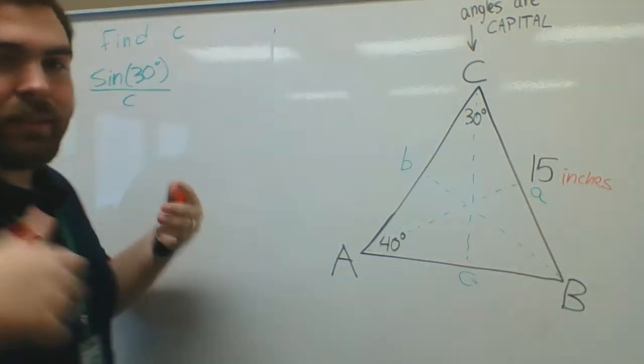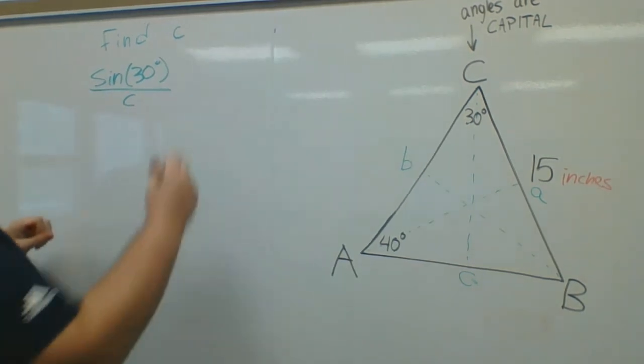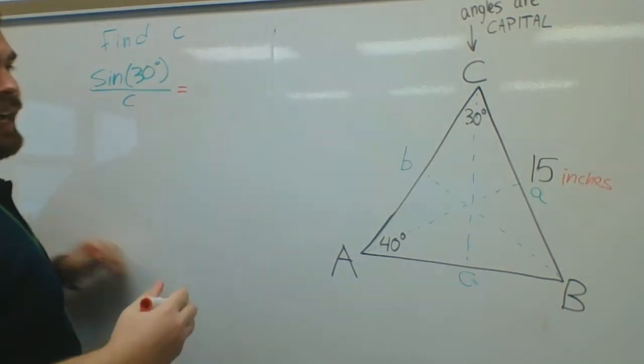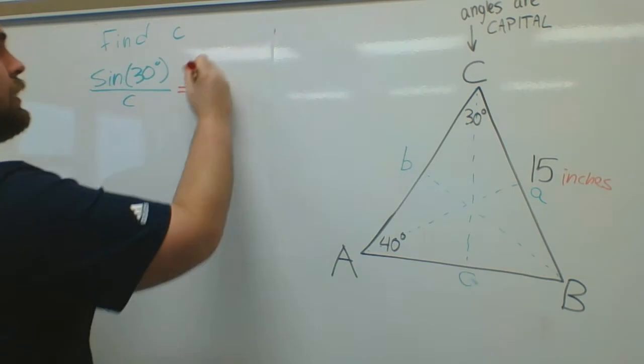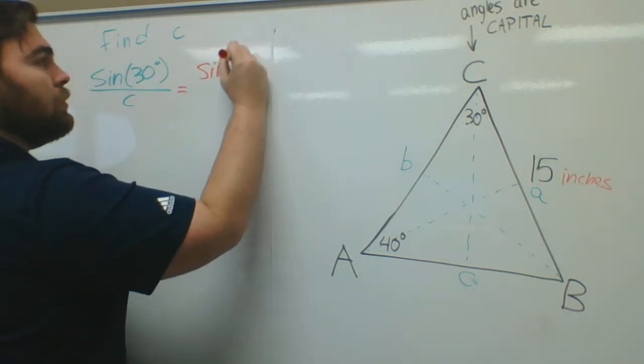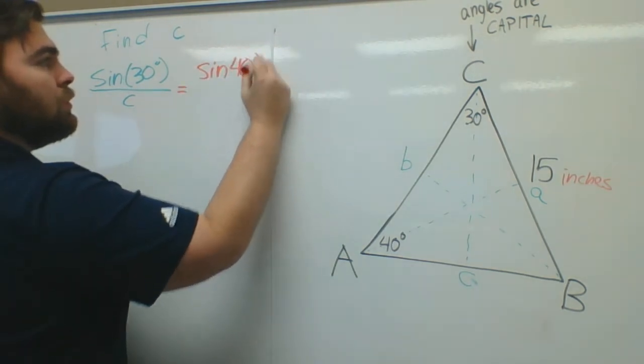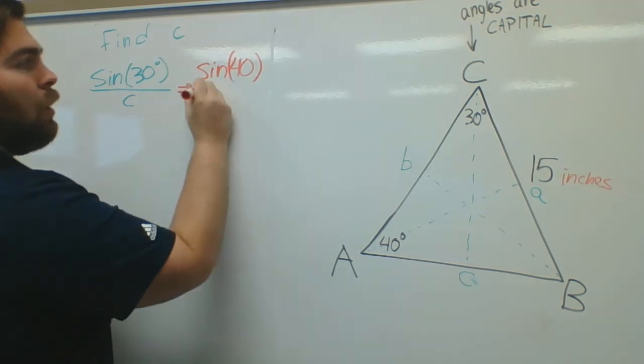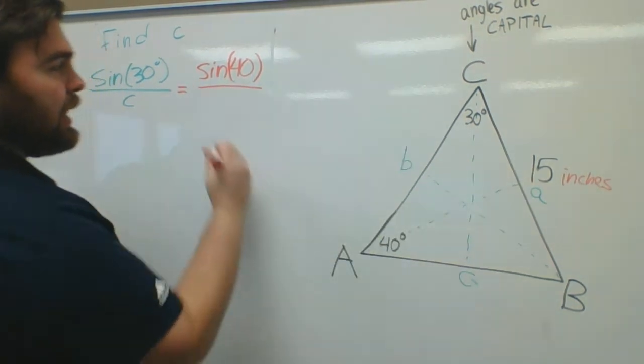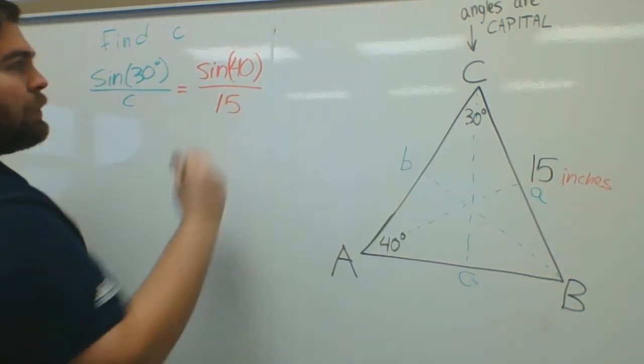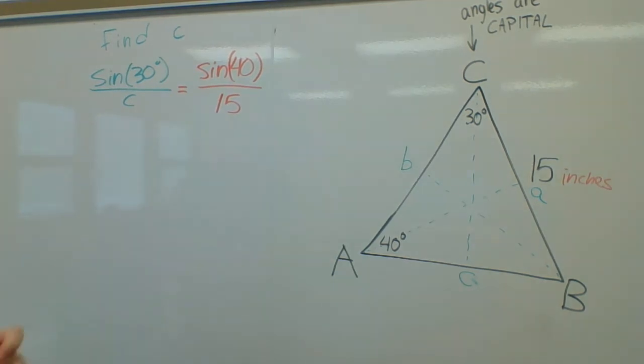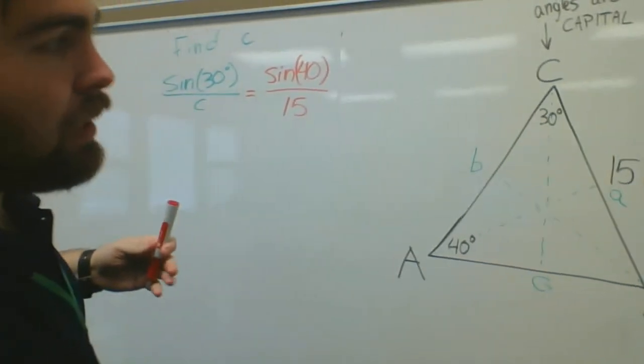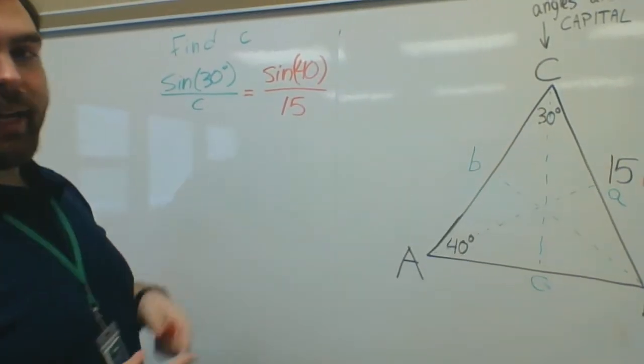Inches, feet, miles, I don't care. So I'm going to set this equal to sine of this angle, sine of 40, sine of 40 degrees over the sideline, so 15. So sine of 30 over C equals sine of 40 over 15. You can use this to solve any triangle as long as you have a certain setup.